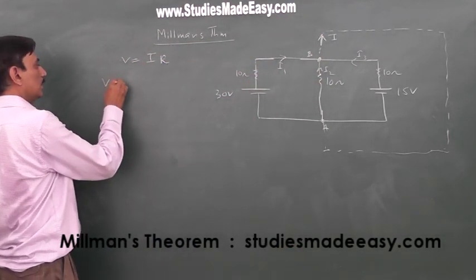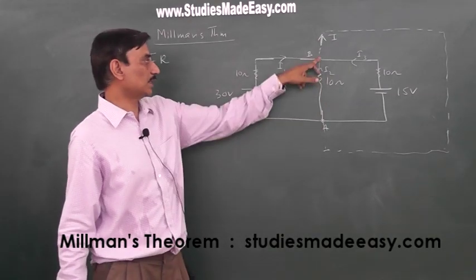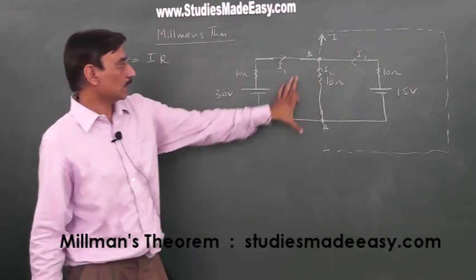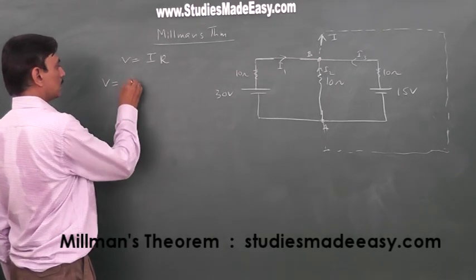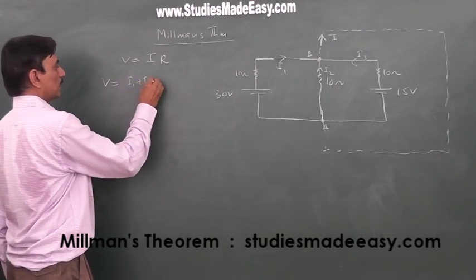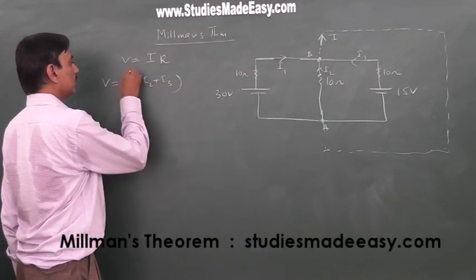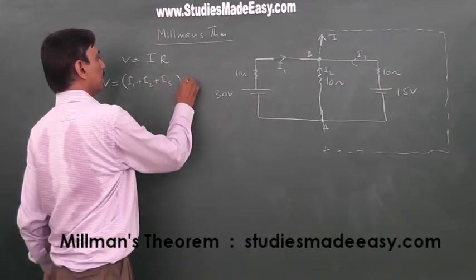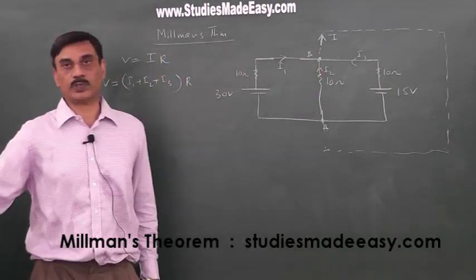So, V, that is potential difference between these two points, is I which is I1 plus I2 plus I3 into R equivalent between these two points.